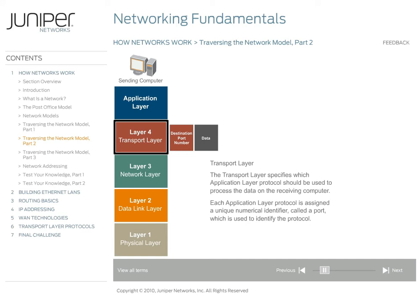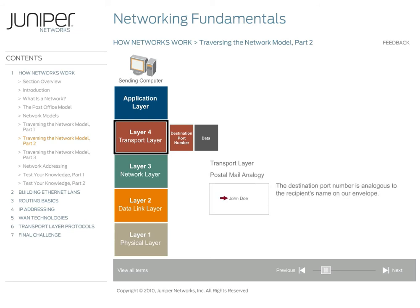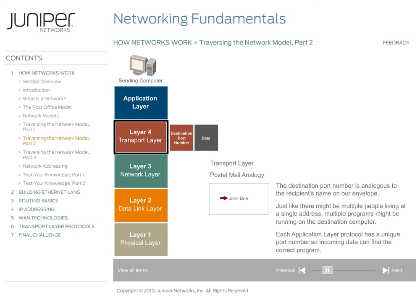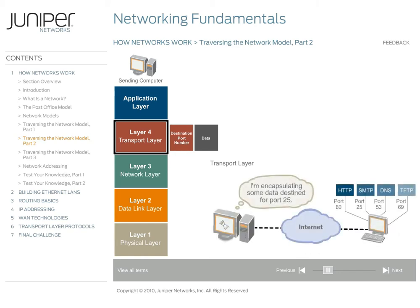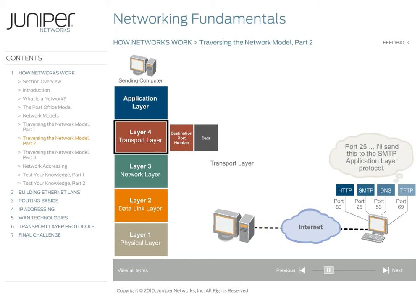Note that this port is a software port, not a hardware port. For example, HTTP uses port 80, DNS uses port 53, and SMTP uses port 25. This destination port number is analogous to the recipient's name on our envelope. Just like there might be multiple people living at a single address each with a unique name, multiple programs might be running on the destination computer using different application layer protocols. Each application layer protocol has a unique port number, so incoming data can ultimately find the correct program. The transport layer includes the destination port number in the header it adds to the data. When the data arrives at the destination computer, the transport layer there examines this number to determine the application layer protocol the data should be sent to.